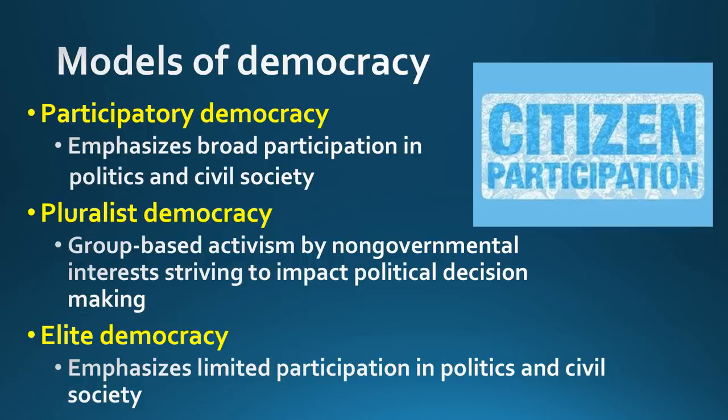Which type of democracy is best? We have three models: participatory, pluralist, and elite. Those who favor participatory democracy favor broad participation in politics by the general public — they want people out there marching in the streets, being active, taking part. Pluralist democracy emphasizes groups of people coming together, forming interest groups, forming political parties. This is what James Madison talked about in Federalist Number 10 about controlling factions, because we have so many different groups competing with each other.